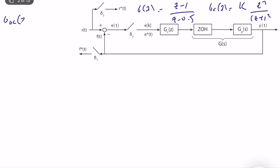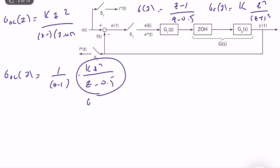Let's write g_ol(z). If we write that, we will find k z squared over (z minus 1)(z minus 0.5). Let's write it in standard form. This is equal to 1 over z minus 1 times k z squared over z minus 0.5. So this is g_dc(z) and this is z to the power n, and as you can see n is equal to 1. So it's a type 1 system.